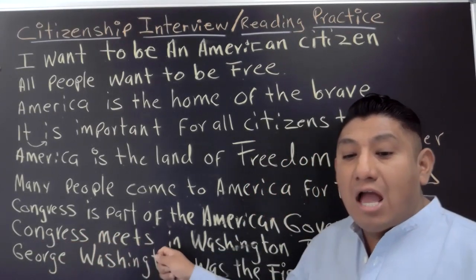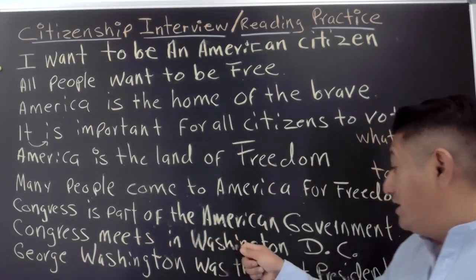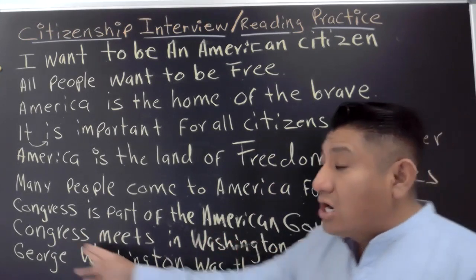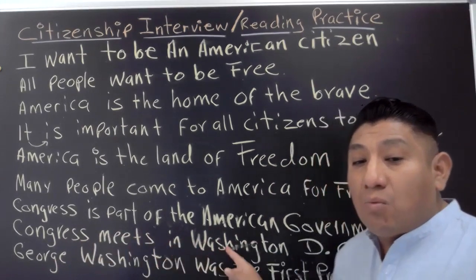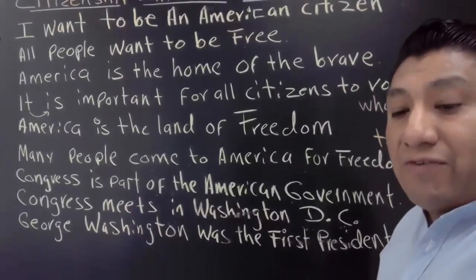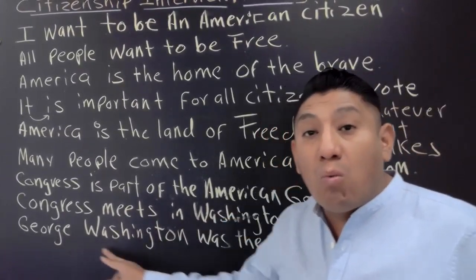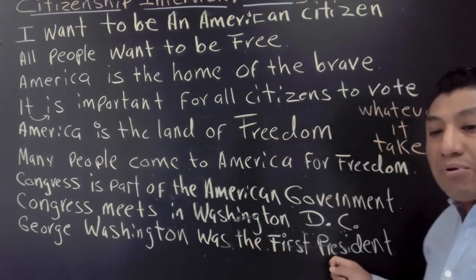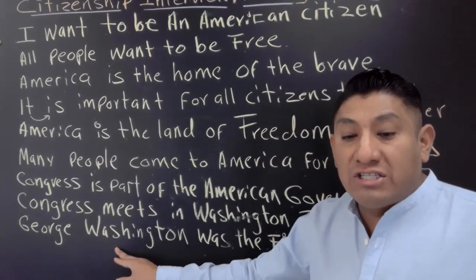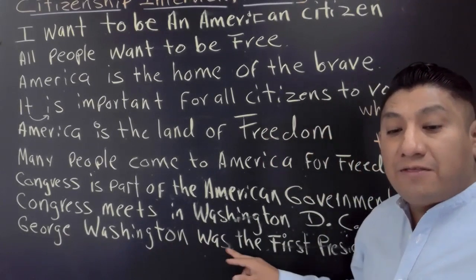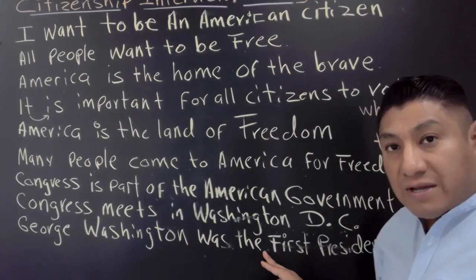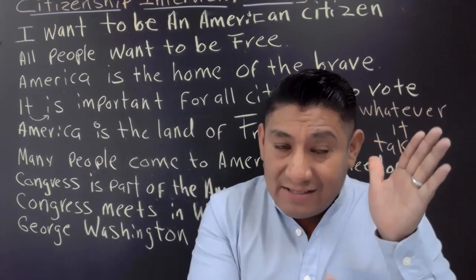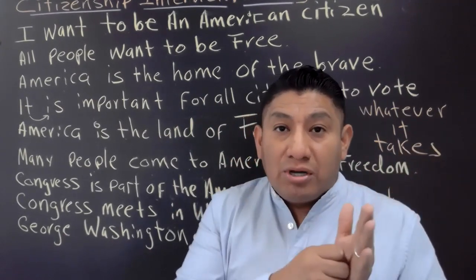Number eight: 'Congress meets in Washington DC.' Congress meets in Washington DC. Number nine — and the very last sentence — 'George Washington was the first president.' George Washington was the first president.